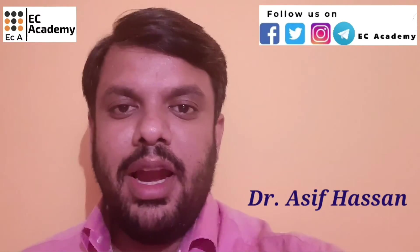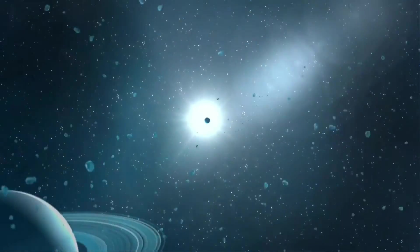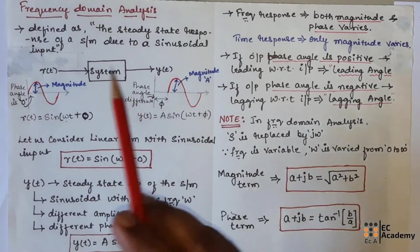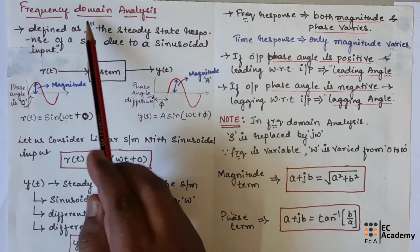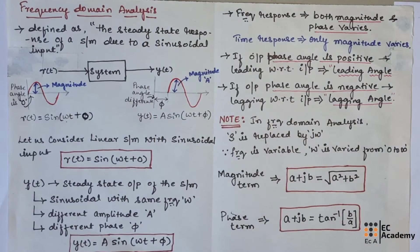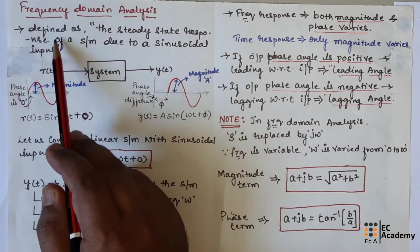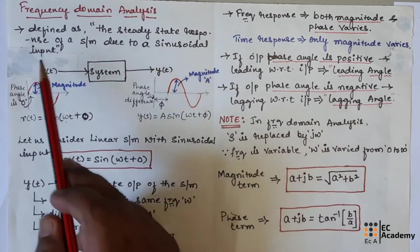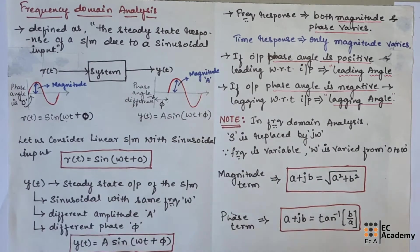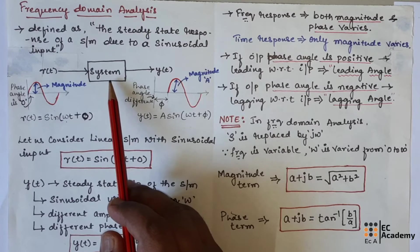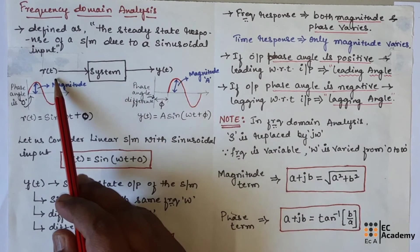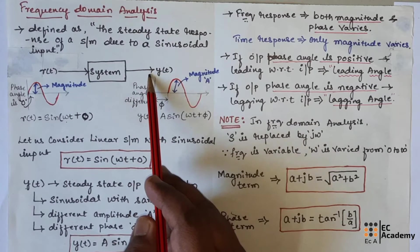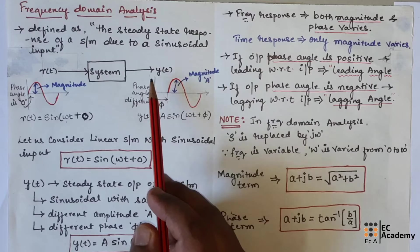Hello friends, welcome to EC Academy. In this lecture, let us understand frequency domain analysis of control systems. We can define frequency domain analysis as the steady state response of the system due to sinusoidal input, which means if we consider a linear system and apply a sinusoidal signal, the steady state response of that linear system is the frequency domain analysis.